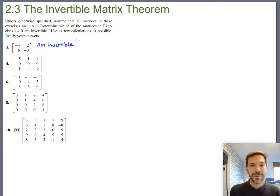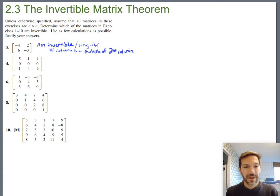If you want to use the really fancy math term for not invertible, you can call it singular. We haven't actually introduced that word yet, but singular means not invertible. And since you're justifying your answer, you could say, like, first column is a multiple of the second column.